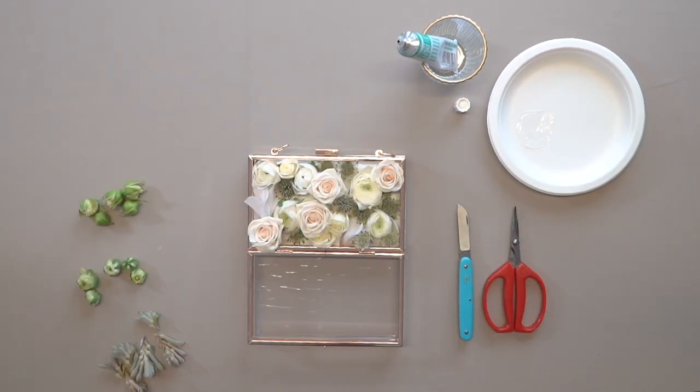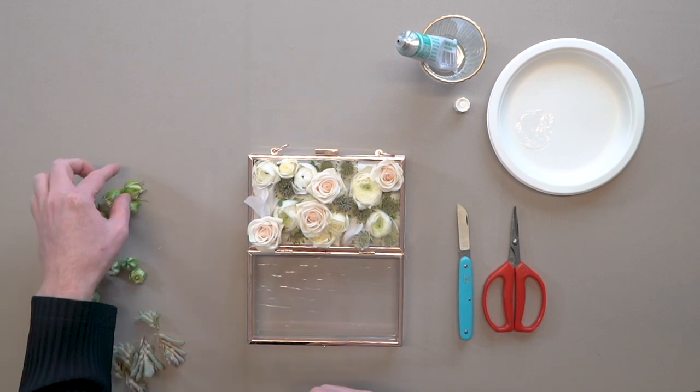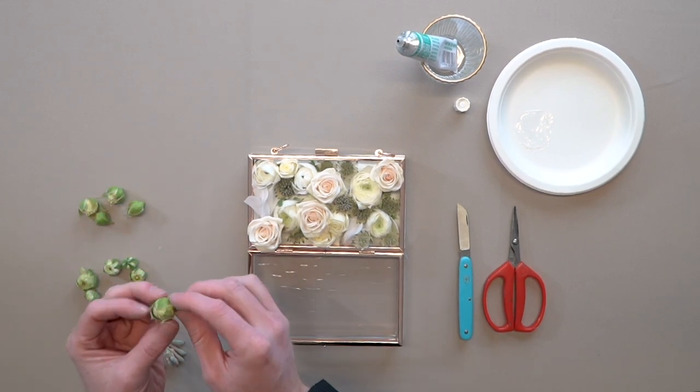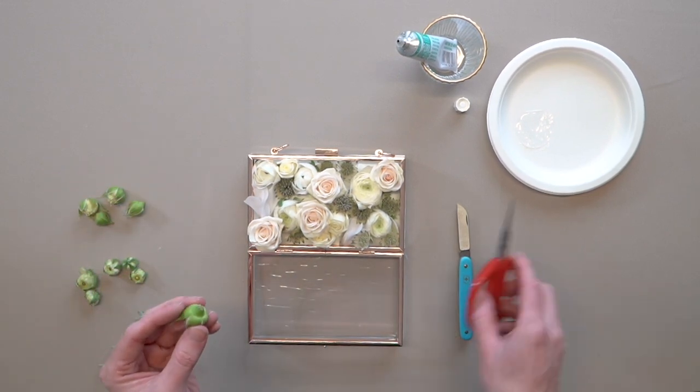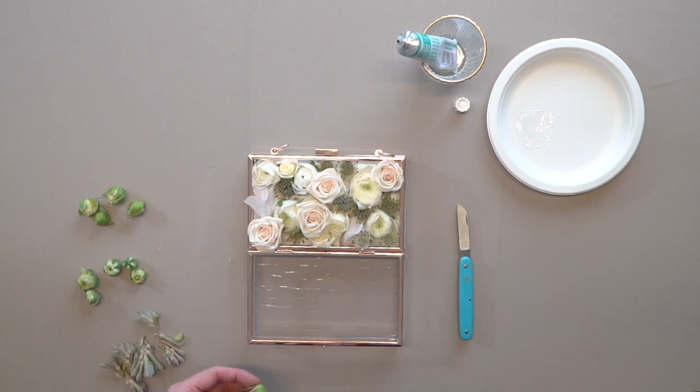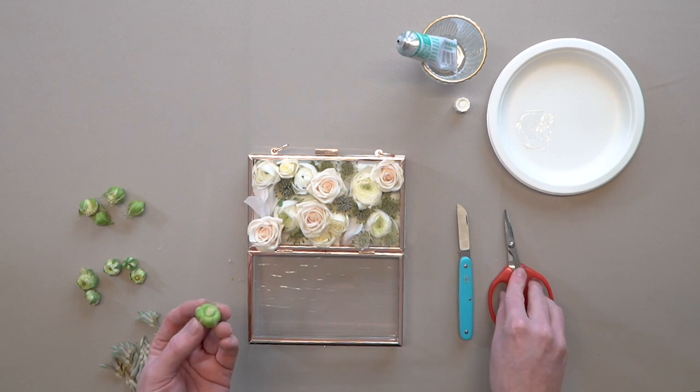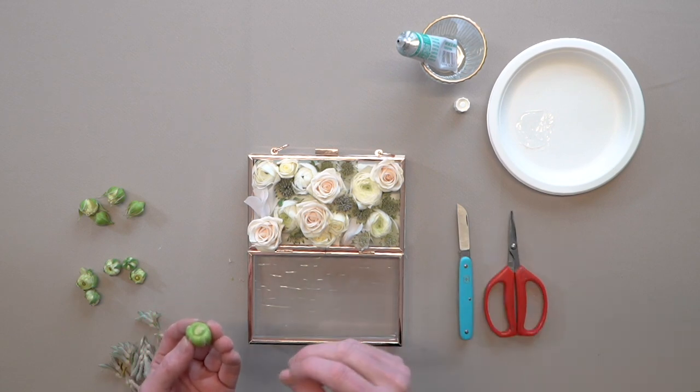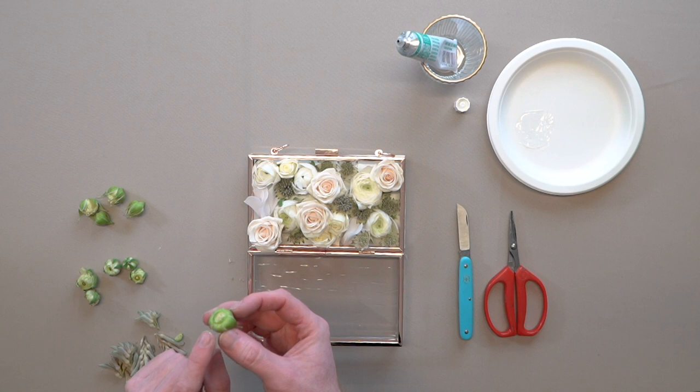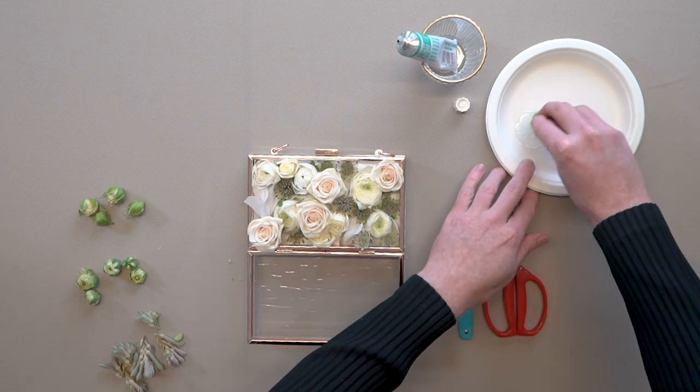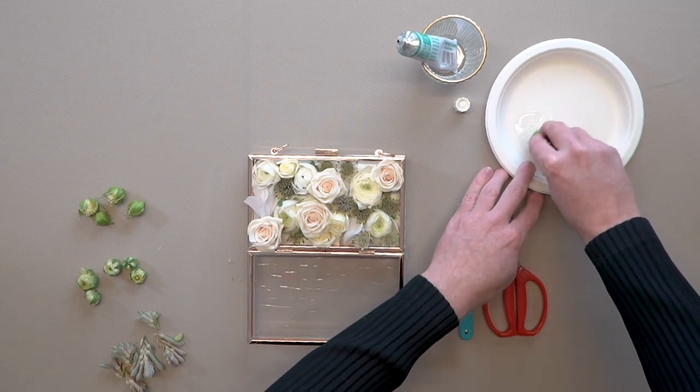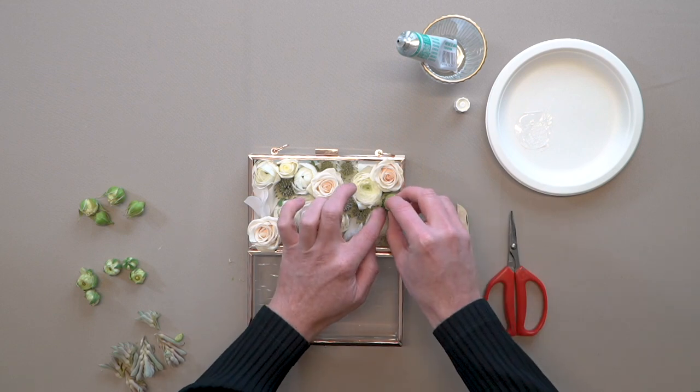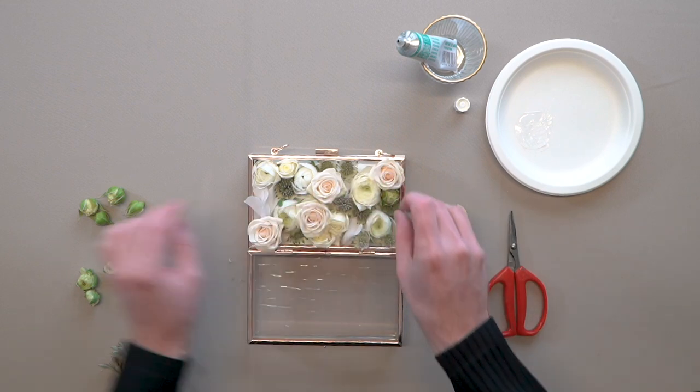After we've placed our astrantia and cyclamen, we're now going to add even more texture. We're going to start by taking these beautiful spray roses. With the spray roses, I'm always sure to take off the calyx on the end. By trimming the edge off, it allows us to have a much flatter base, which means adhering them to any surface is much quicker and easier. We're going to take the spray rose and dip it directly into the little pool of cold glue.